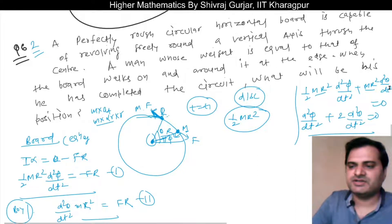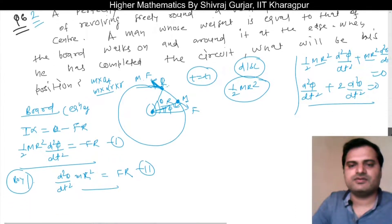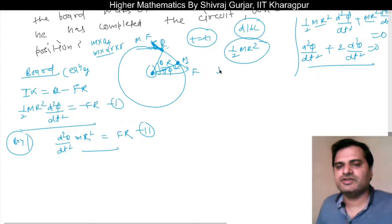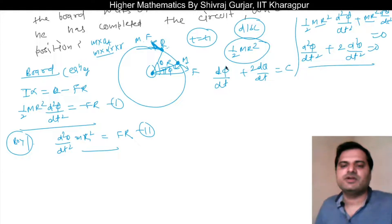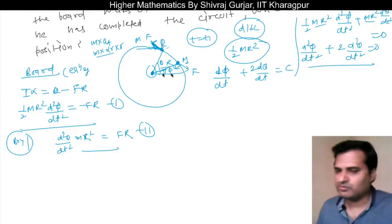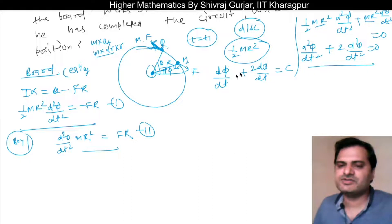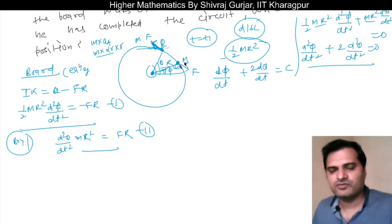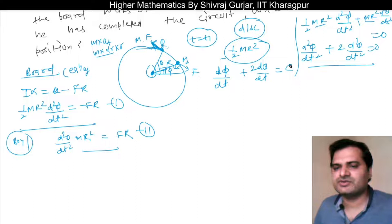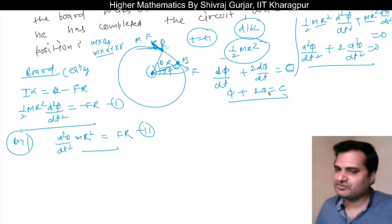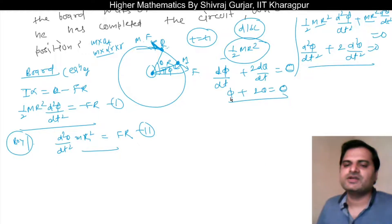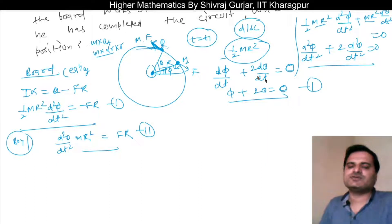If we integrate this, we get dφ/dt + 2 × dθ/dt = C. But initially both are at rest, so at t = 0 both angular velocities are zero, giving C = 0. Integrating again: φ + 2θ = constant. Initially t = 0, φ = 0 and θ = 0, so this constant is also 0. Therefore φ + 2θ = 0.